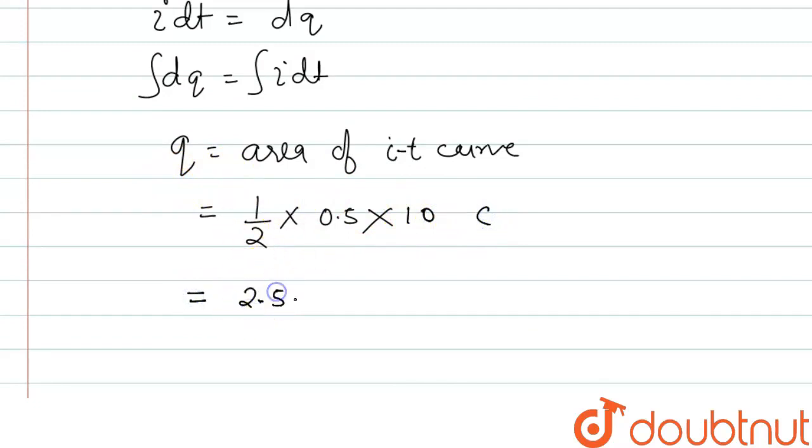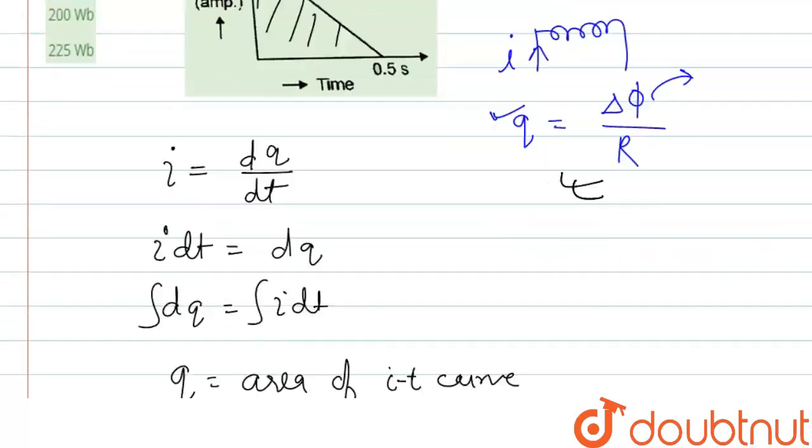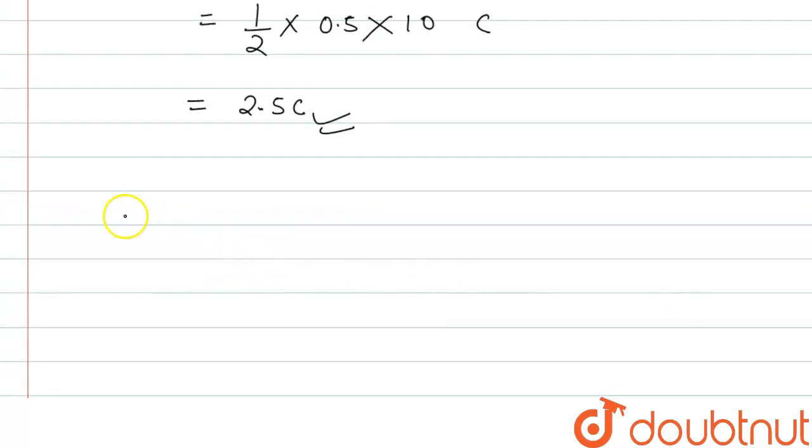So this is the charge. Now if we substitute this in this equation, we can find the change in flux. So we can write the equation q equal to change in flux by the resistance, or we can write the change in flux equal to q into R.